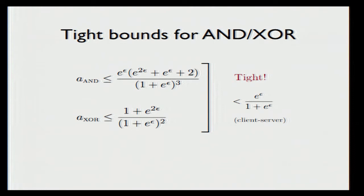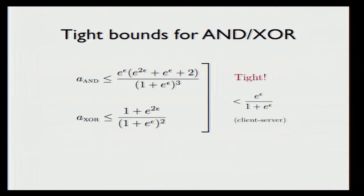To obtain a generic bound for every Boolean function, we show that if the function is non-trivial, then there must exist two adjacent inputs on which the truth table of this function embeds either an AND or an XOR. And if it does so, then every Boolean function is subject to the same accuracy gap. This proves our main result.